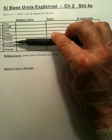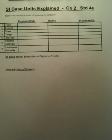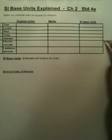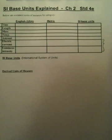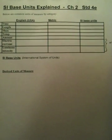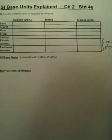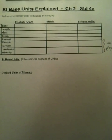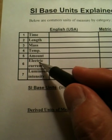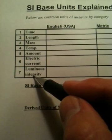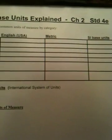For all the different types — time, length, mass, temperature, amount, electric current, and luminous intensity — the last two, electric current and luminosity, are only going to be used in physics. You really don't have to worry about those at all, but they're there because the textbook shows them. Electric current and luminosity will not be used in chemistry.